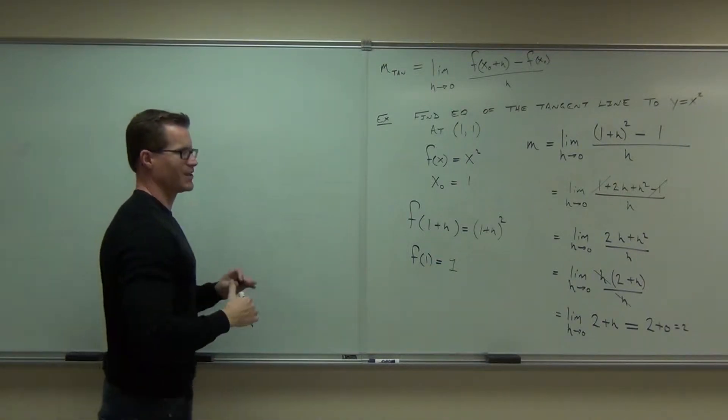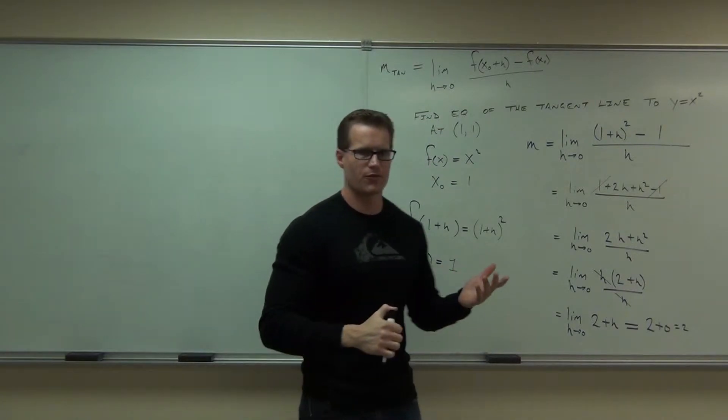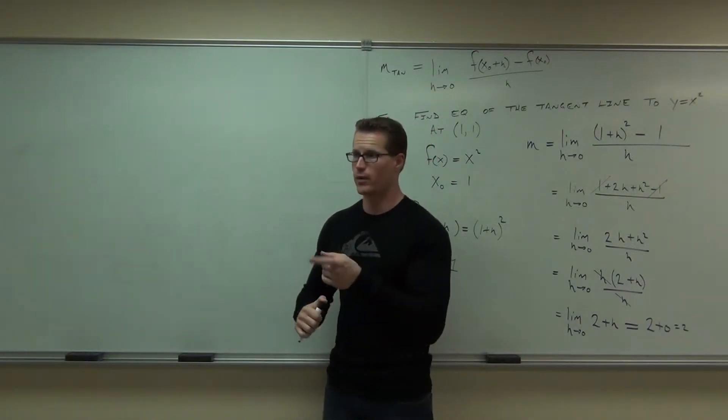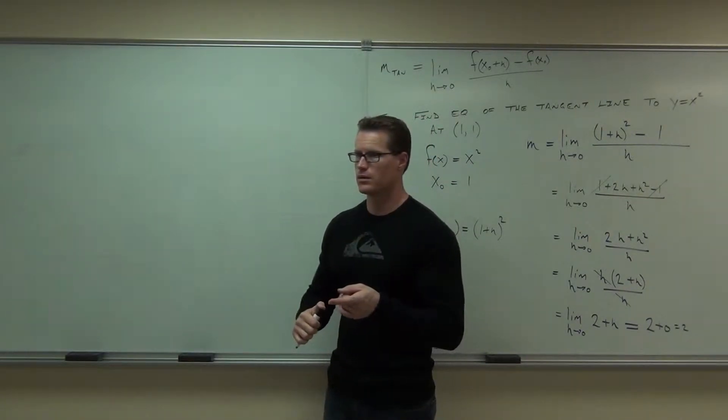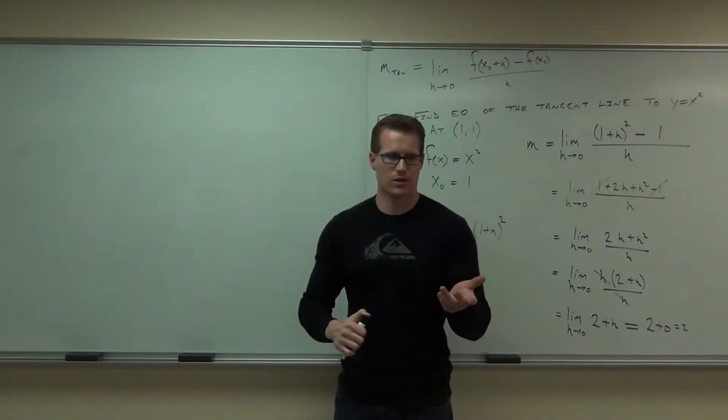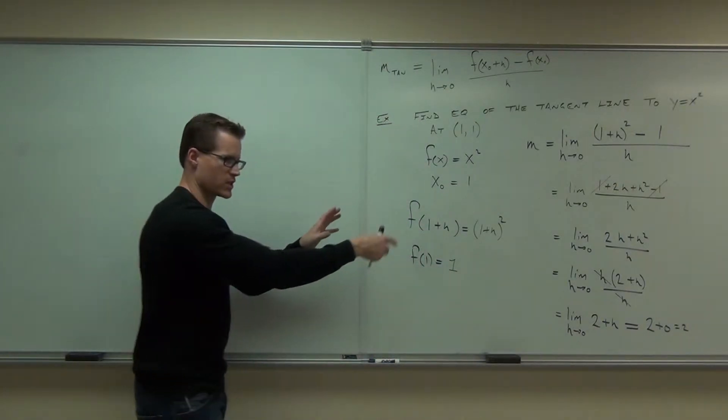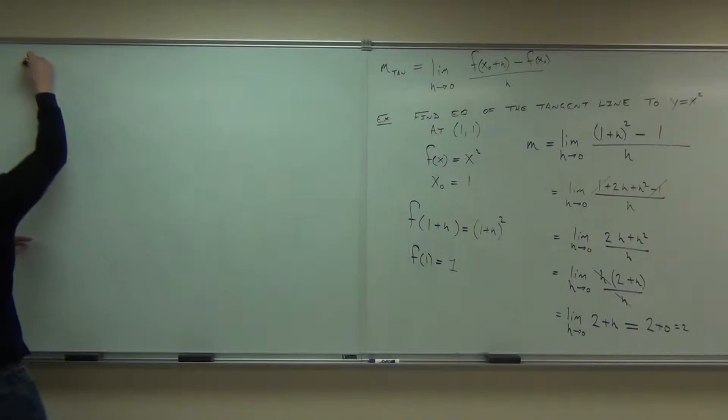Two. That's kind of cool. What's the slope of that curve at the point (1,1)? Two. You just found it. You found the slope of that curve at that point, and now it made a lot more sense because we got to use limits with it. So the slope of that tangent line is two.